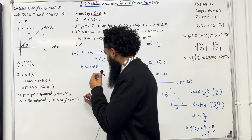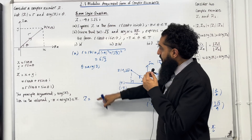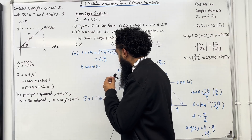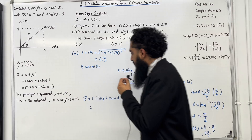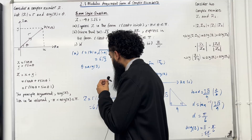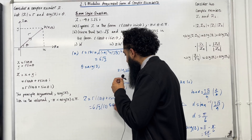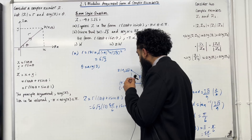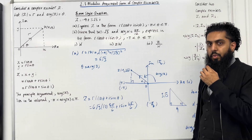So z can be expressed in the form r(cos θ + i sin θ) as: z = 6√3 (cos(5π/6) + i sin(5π/6)). This completes part A of the exam-style question.